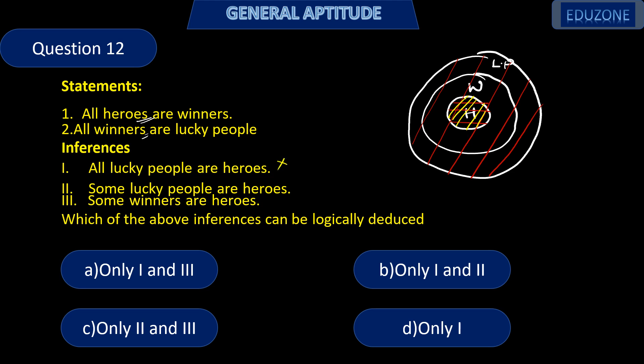Inference 2: Some lucky people are heroes. We can see that out of the lucky people, some are heroes — this is correct. Inference 3: Some winners are heroes. Out of the winners, a small portion are heroes — this is also correct. So the answer is C, only 2 and 3.